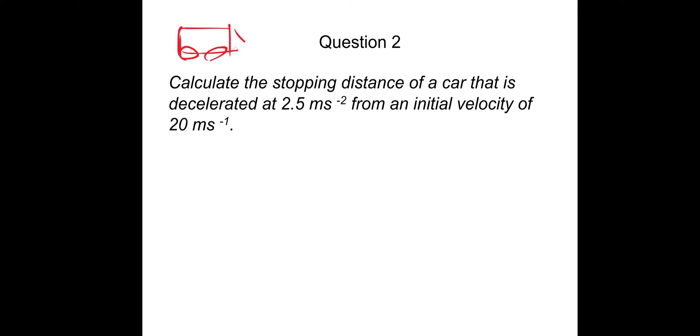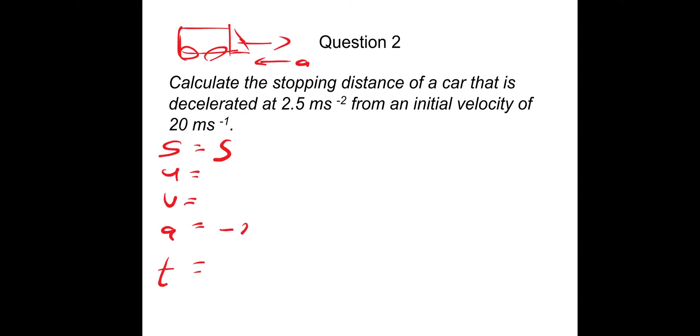Question two: calculate the stopping distance of a car that is decelerated at 2.5 meters per second squared from an initial velocity of 20 meters per second. The car is moving in one direction but decelerating in the opposite direction. Writing SUVAT: S is the stopping distance we need, A is minus 2.5 meters per second squared (deceleration), U is 20 meters per second. At first glance you might think we're missing something — but for stopping distance, the final speed V is zero.